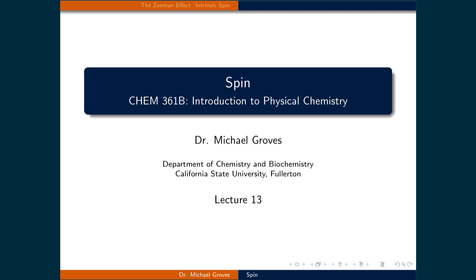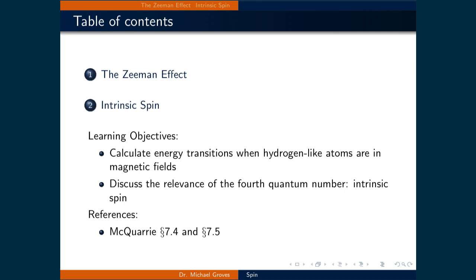Welcome to lecture 13. In this preparation lecture, we will explore more properties of angular momentum in the context of the hydrogen atom and introduce the fourth quantum number, spin. This lecture will be divided into two pieces. In the first part, we will discuss the Zeeman effect, which is what happens to the energy levels of the hydrogen atom when it is placed in a magnetic field. In the second part, we will introduce the fourth quantum number, intrinsic spin.